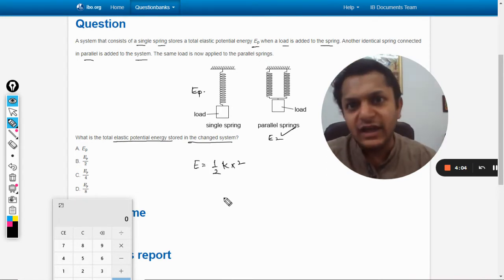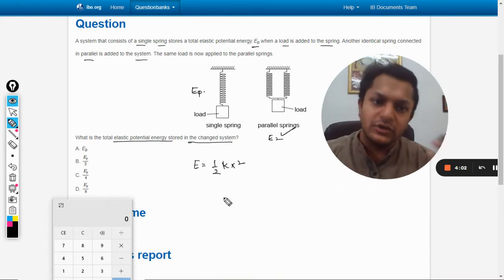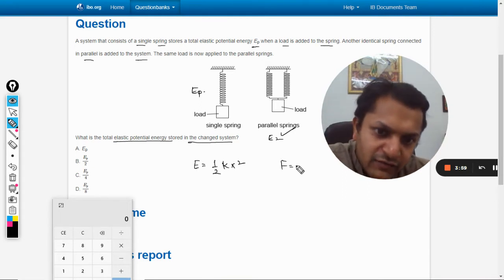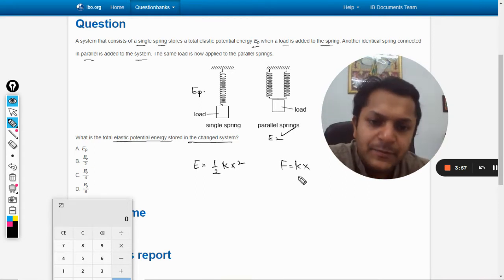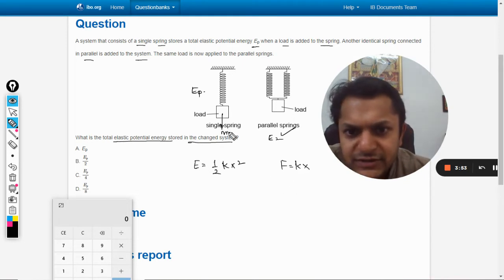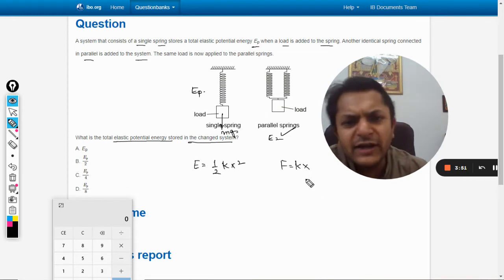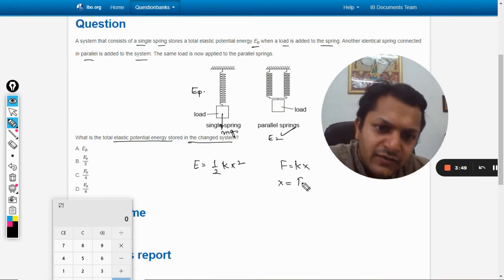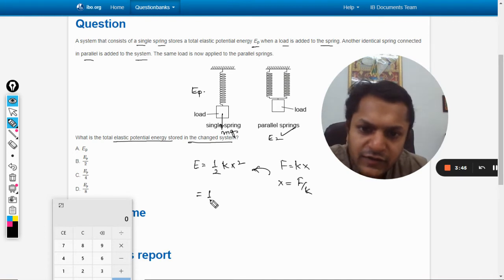Let's see, F is equal to kx, and the force here will be mg. Let's call it F only. So x is equal to F by k. Substituting this value here, we can create another formula for us.